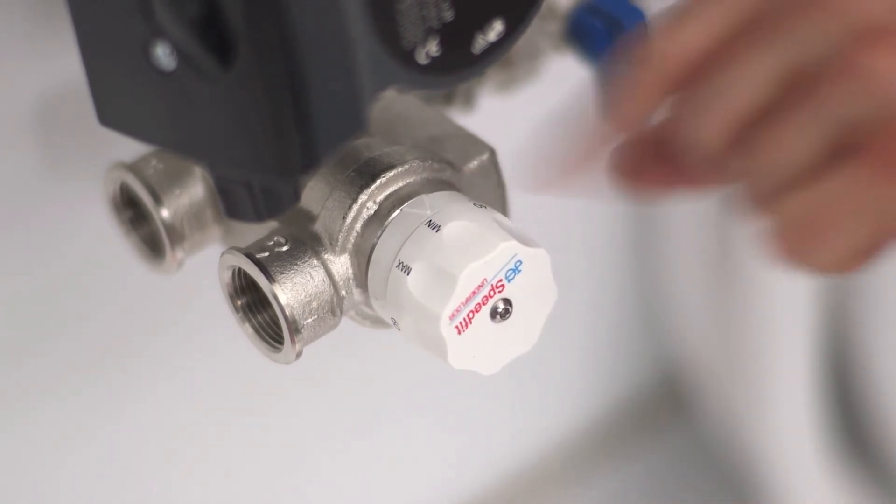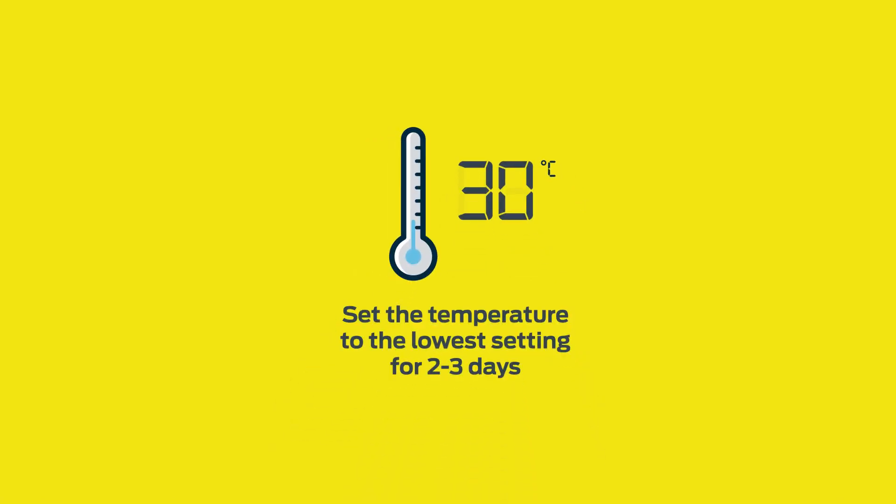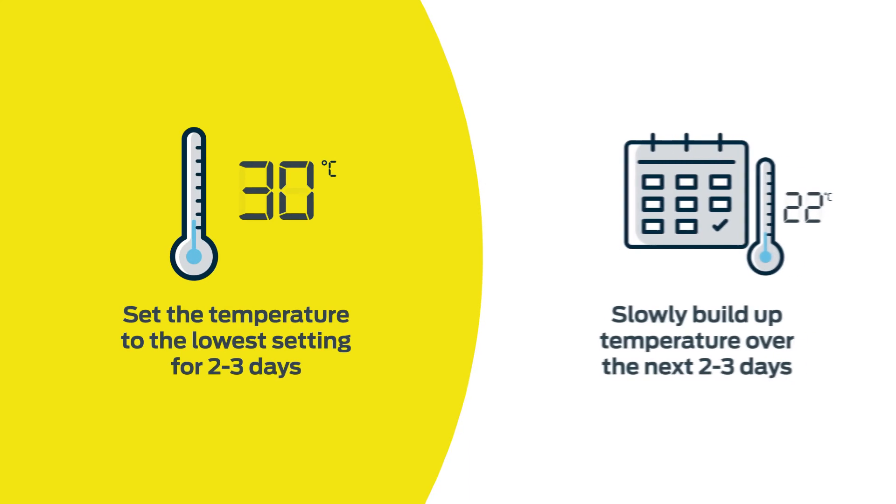When turning on initially, the temperature of the blending valve should be set to the lowest setting, 25 to 30 degrees, and run for 2 to 3 days before building up the temperature over the next couple of days.